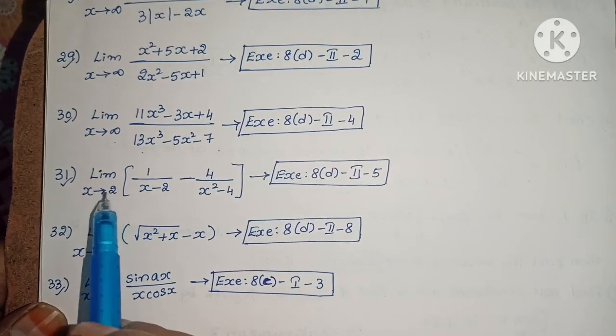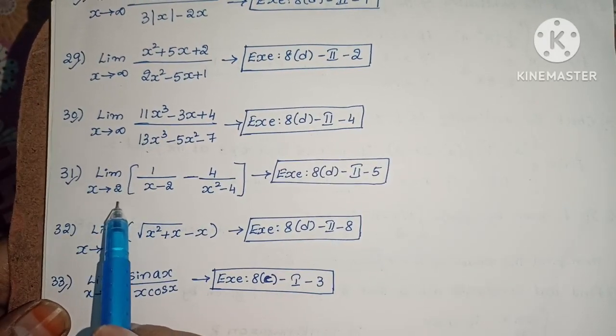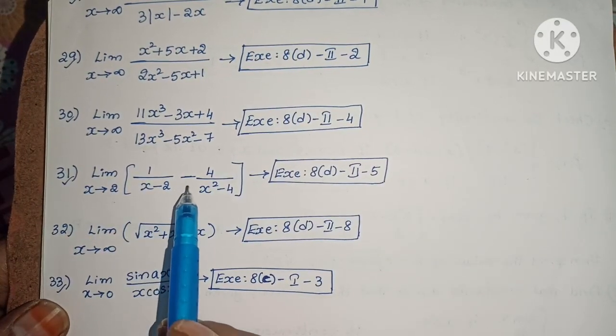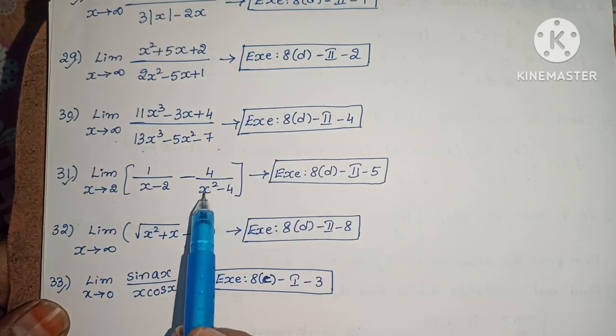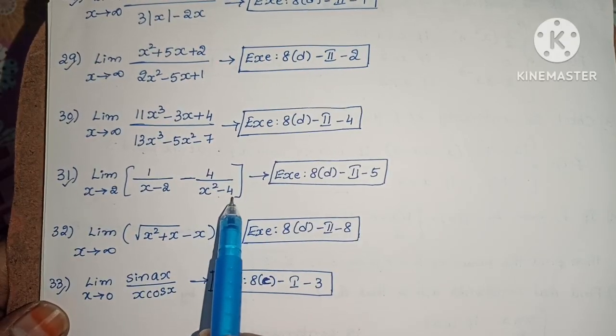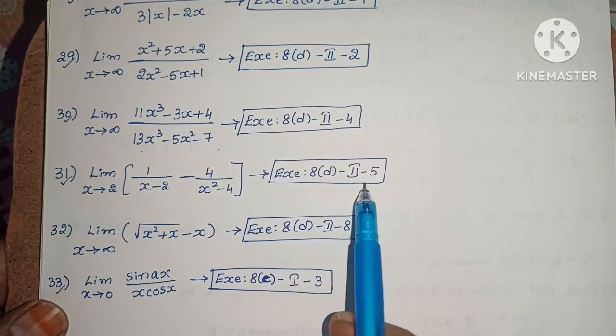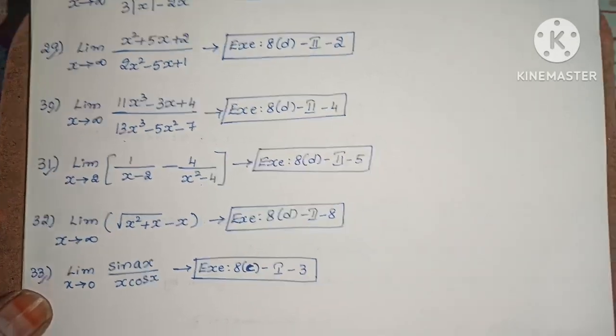Next: Limit extends to 2 of 1 by x minus 2 minus 4 by x squared minus 4. Exercise 8c, second roman law, fifth one.